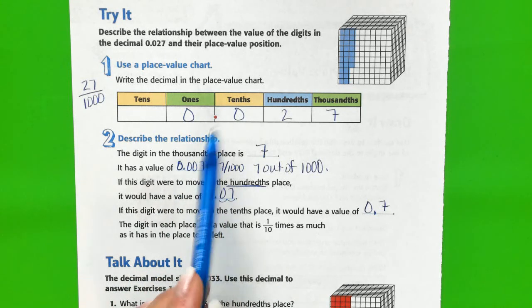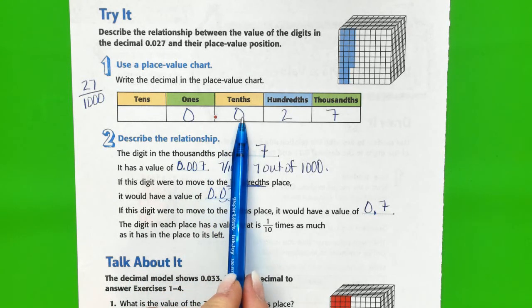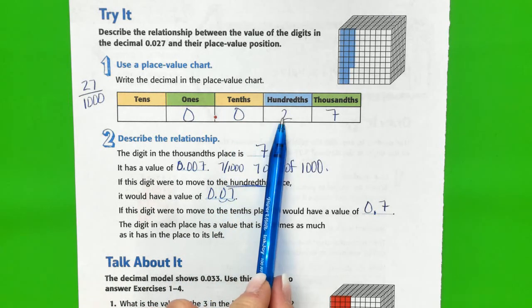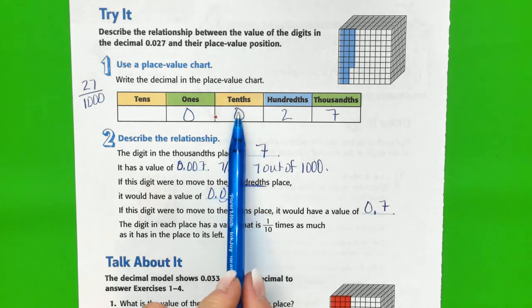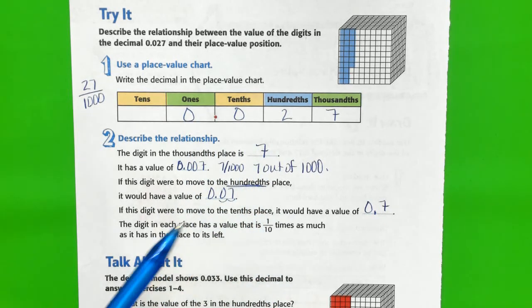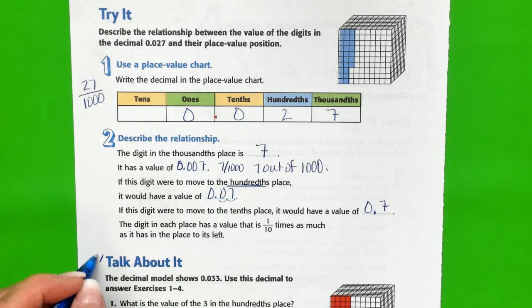Remember, I'll say it again: this place value is always ten times more than this. This is one tenth as much as this - assuming this would be a two. I hope that makes sense, and I would like you to do your Talk About It section with your teacher. Thanks for listening.